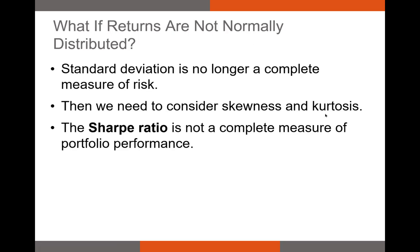What happens if returns aren't normally distributed? If returns aren't normally distributed, there might be another measure like skewness or kurtosis that more appropriately captures the risk of an asset. It also means that the Sharpe ratio, whose standard deviation is the denominator, is not going to be a good measure of risk-adjusted returns. So we want our returns to be normally distributed — if they're not, a lot of metrics like the Sharpe ratio completely fall apart and you can't use them.